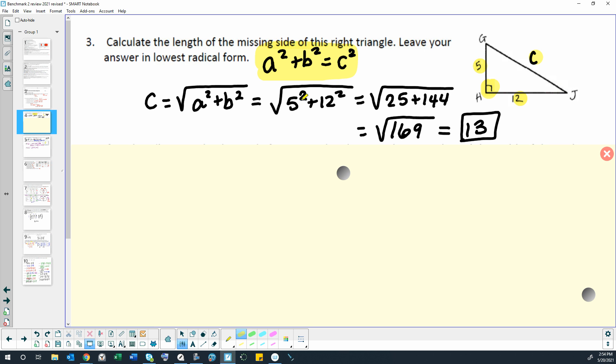5 squared means 5 times 5, which is 25. And 12 squared means 12 times 12, which is 144. So we get 25 and 144, which we add together and get 169. That would be the answer for C squared, but we need to find C. So in order to get C from C squared, we square root the answer.